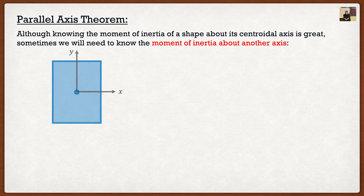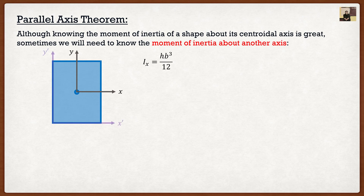So if we have a rectangle, we found Ix as base times height cubed divided by 12, but this is only if our x-axis passes through the centroid of our rectangle. Well, it means that if the prof wants to be mean on the exam, they're going to say okay, you know it about the x-axis that passes through the centroid, but what happens if I want the moment of inertia about this axis x prime?